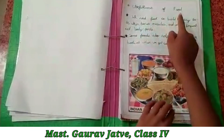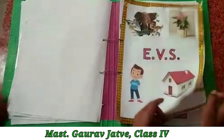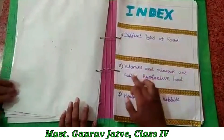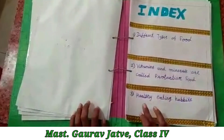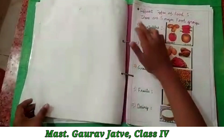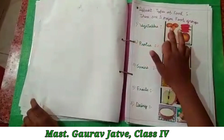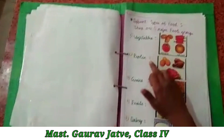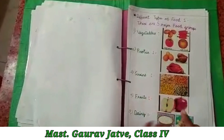Usefulness of food. This is my EBS project. Index: different types of food. Vitamins and minerals are called protective food. Healthy energy habits. There are 5 major food groups: vegetables, protein, grains, fruits, and dairy.